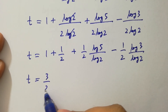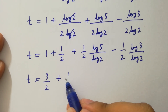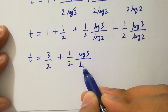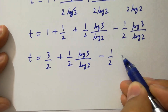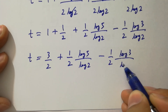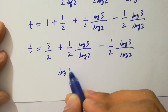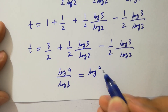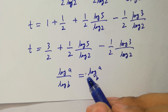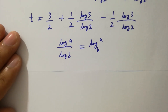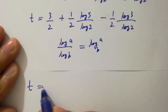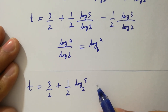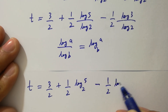Continuing, we get t equal to 3 over 2 plus one half times log 5 over log 2 minus one half times log 3 over log 2. Since log A over log B equals log A to the base B, t will be equal to 3 over 2 plus one half log 5 to the base 2 minus one half log 3 to the base 2.